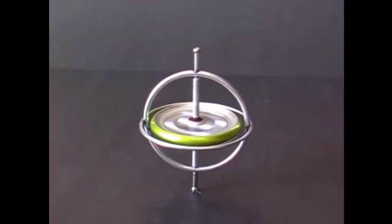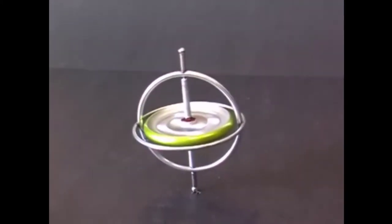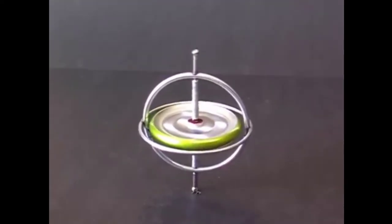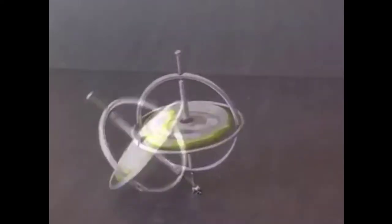The spinning wheel is creating a force that holds the gyroscope upright. When the wheel stops, the force disappears and the gyroscope falls.